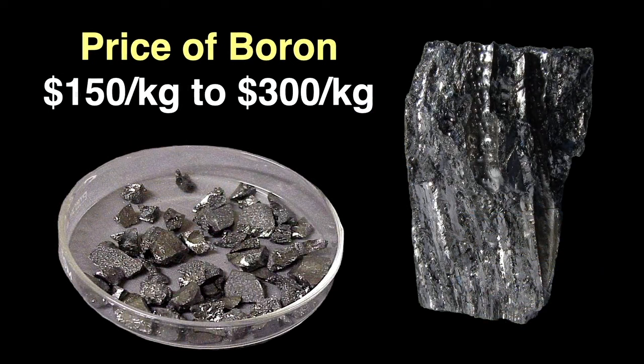Boron metal goes for between $150 and $300 per kilogram. Of course, the price depends on the quantity you buy and its purity. Because of its low density, you get a lot of boron volume-wise for its weight. If I wanted to add boron to my set of density cubes, it would cost me between $65 and $130 for a new cube, but it's so close to the density of aluminum, there's really no point. And given its hardness, machining it would be very, very difficult.